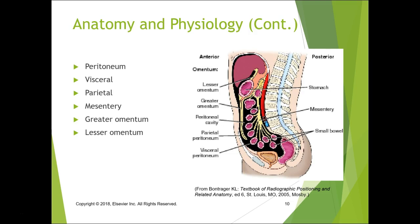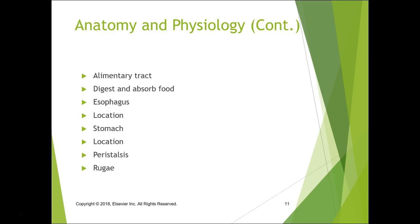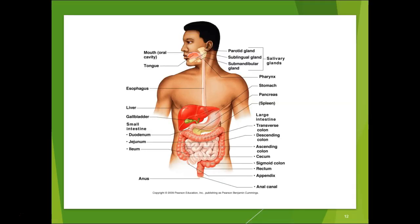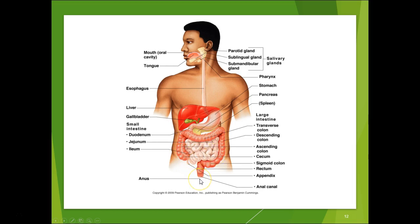Looking at a midsagittal view, you can see where everything is within the abdominal and pelvic region. Know your anatomy — from the mouth all the way through the esophagus to the stomach, you see the liver and gallbladder. From the mouth down the esophagus into the stomach, into the jejunum, ileum, then ascending colon, transverse, descending, sigmoid, rectum, and anus.